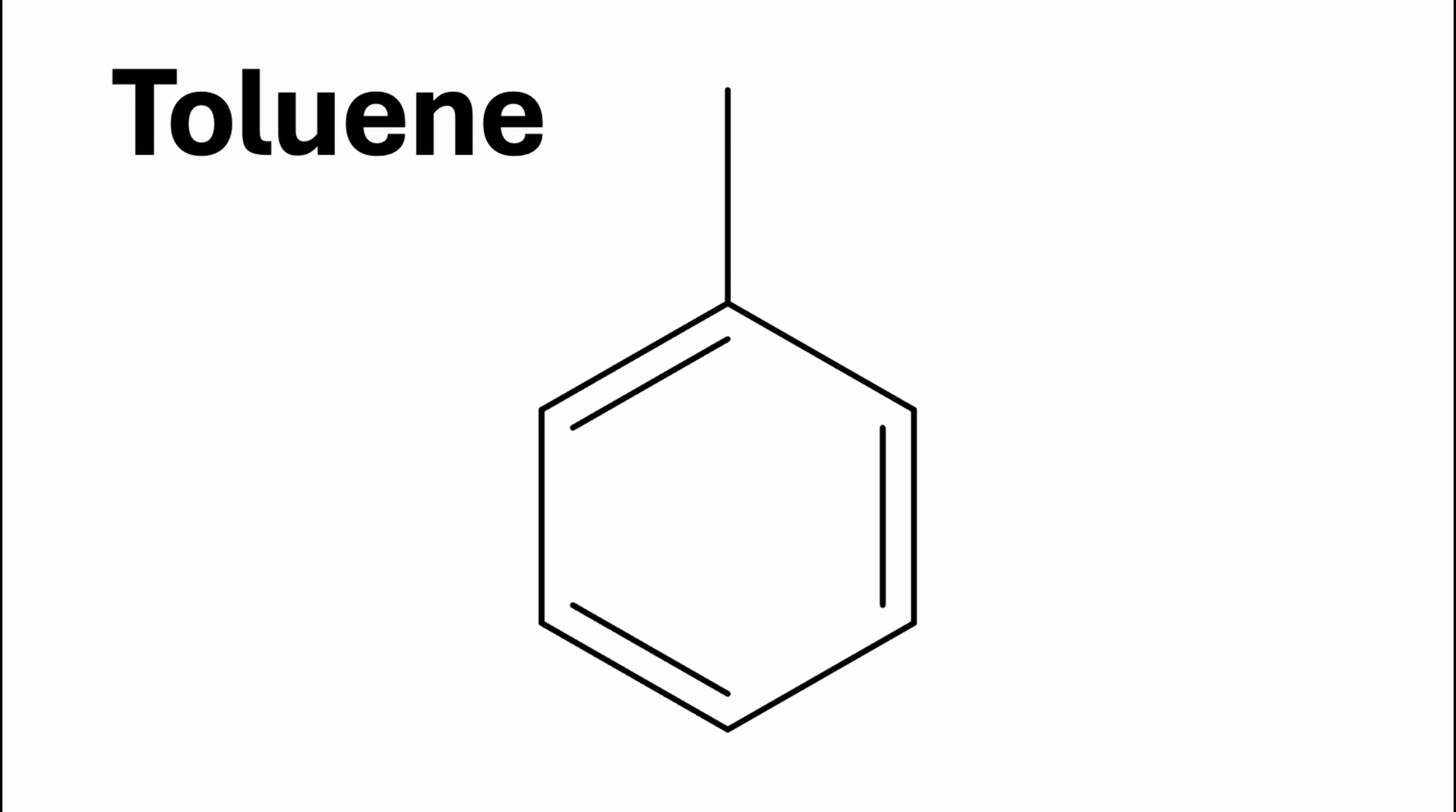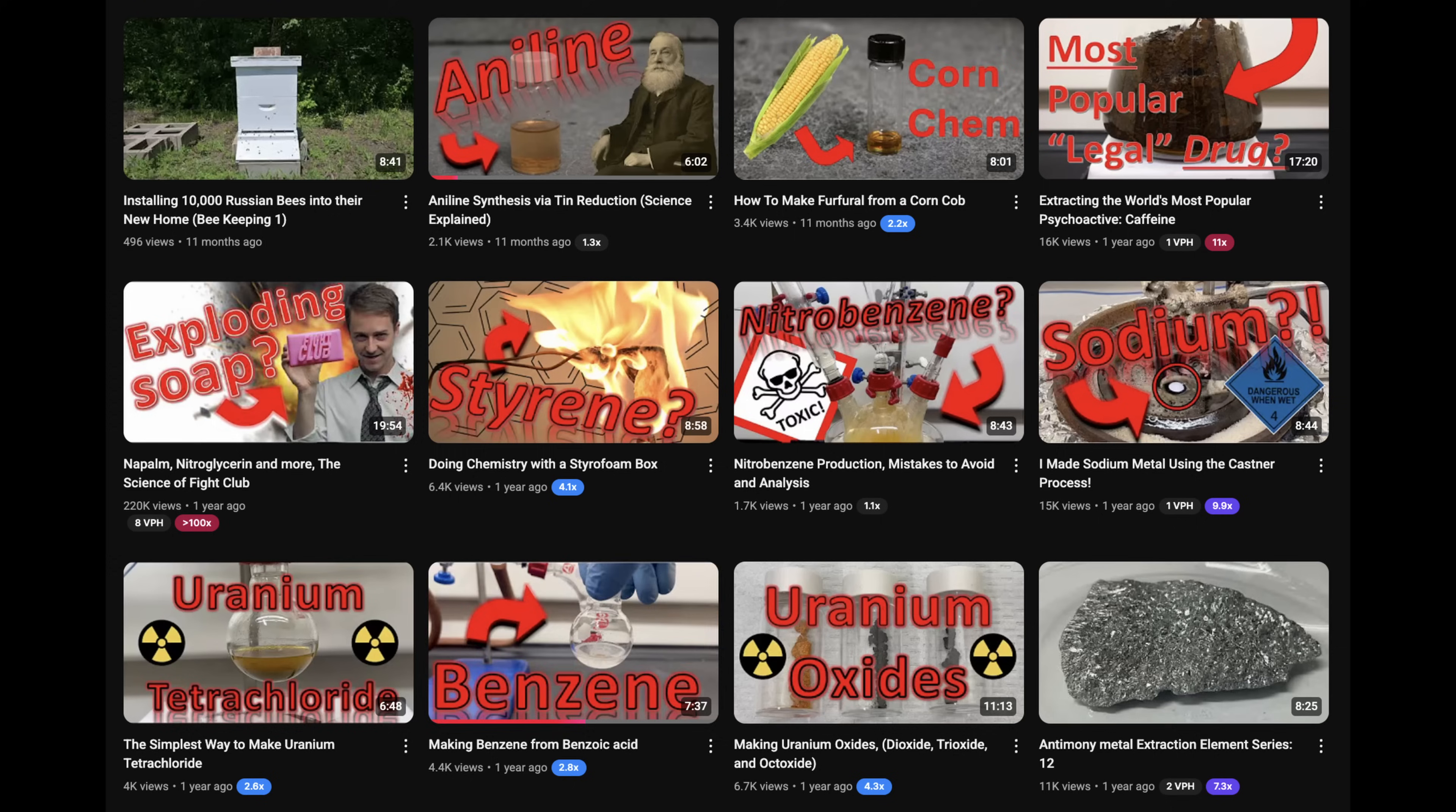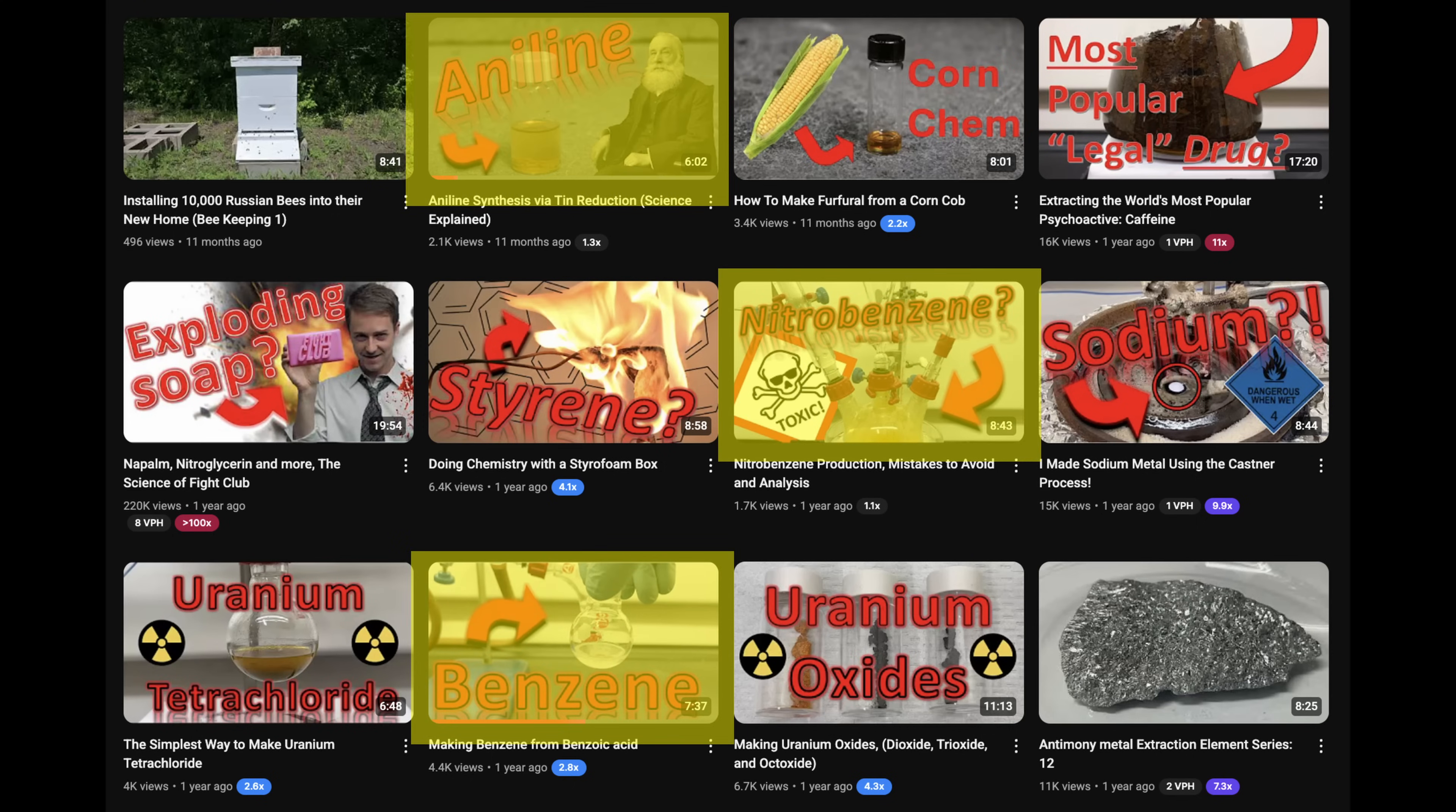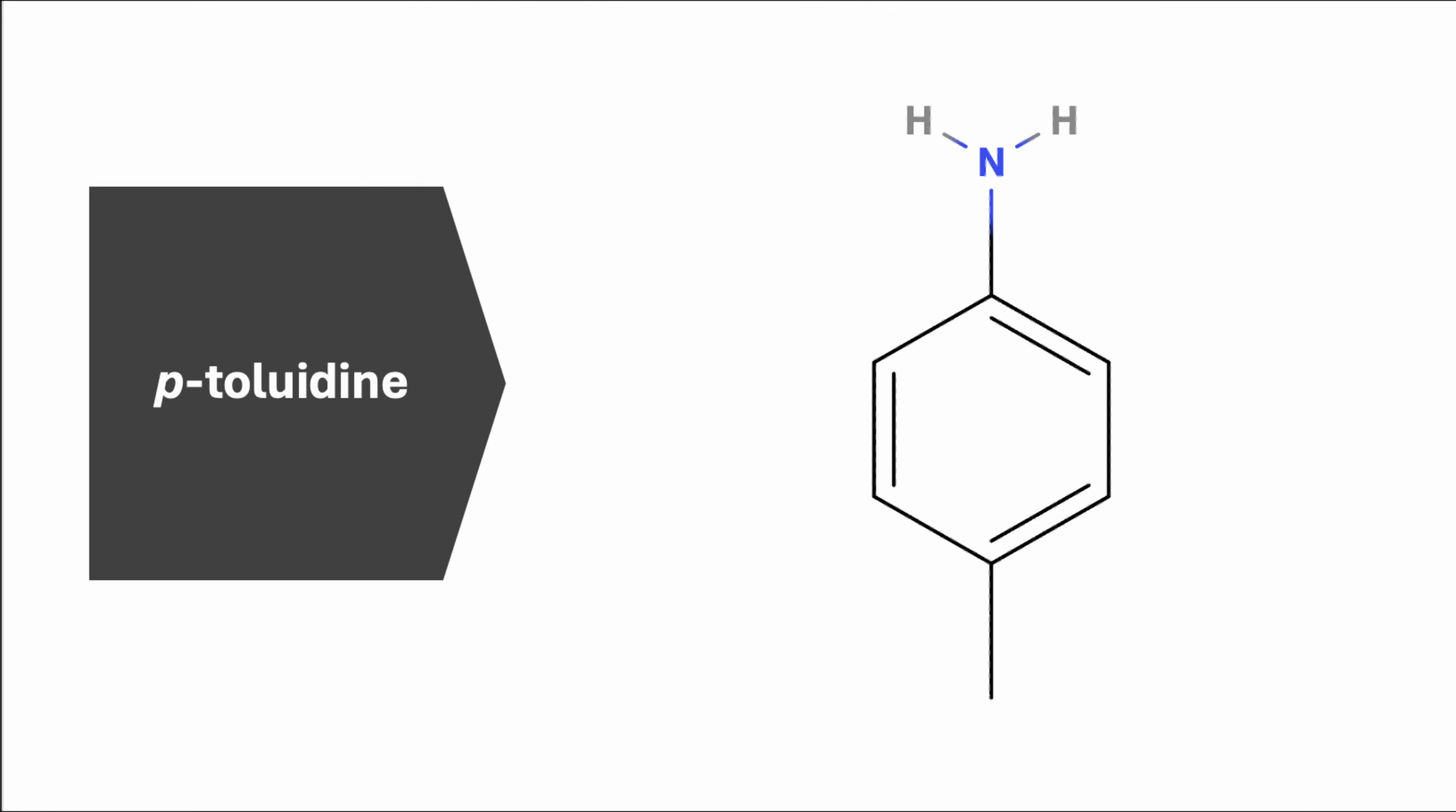If you've been watching my videos for a while, you know I love toluidine. It's a great starting block, and we could do that today, but I've already walked through the same reaction path in other videos, just starting with benzene to end up instead with aniline. So to keep things moving, I'm going to skip ahead and start with p-toluidine, which you could make using similar chemistry to those videos, just starting with toluidine.